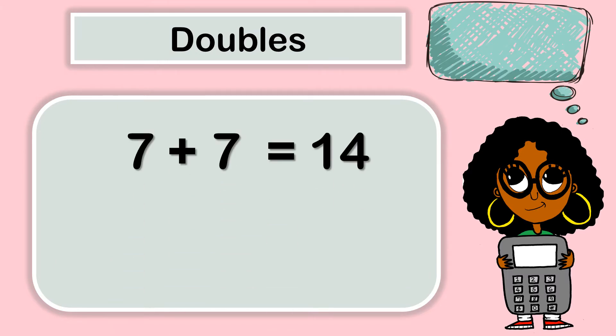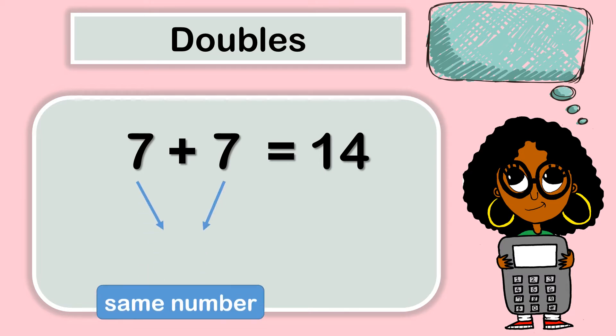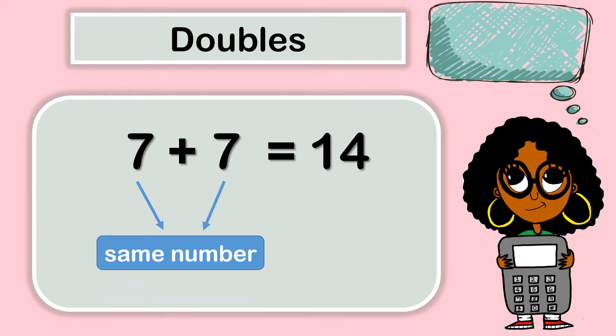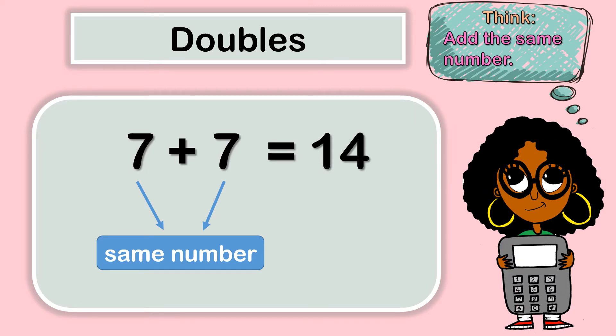Let's look at this. Seven plus seven equals 14. Here we see that the digits seven are the same. So when we are doing doubles, we are adding the same number.